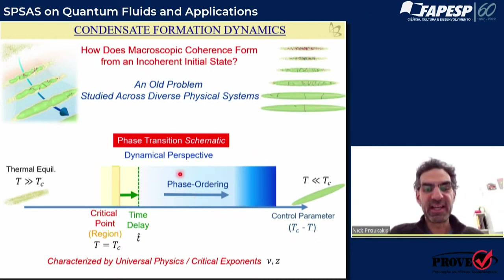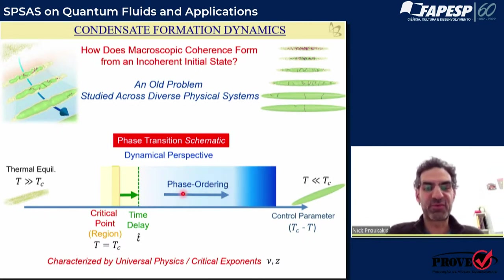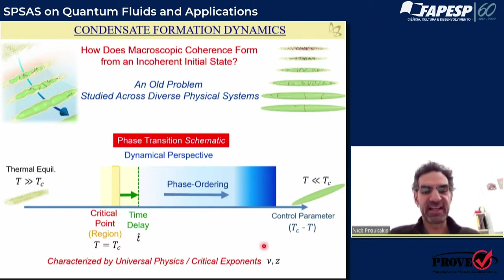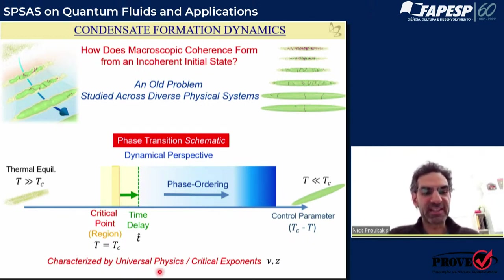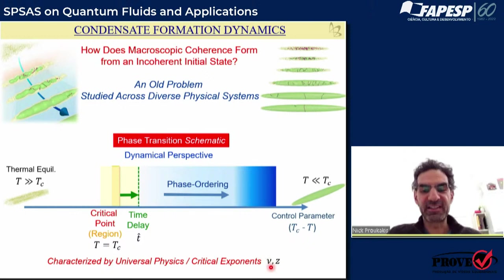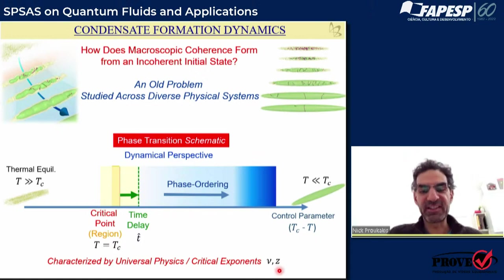That non-equilibrium state has to relax and equilibrate to its final state through the decay of all these spontaneous defects or vortices that form — a phase ordering process until in the end you have a phase-coherent condensate at a given temperature. The key point is that all of these different stages across this process are actually characterized by universal physics. There are certain critical exponents associated with criticality: ν and z — the static and dynamical critical exponents. Depending on the type of phenomena you're studying, there's a certain universality class, and in that sense we can connect cold atoms to liquid helium, for example.